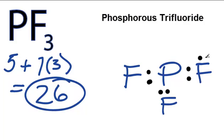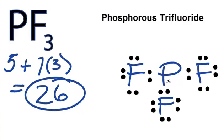So 2, 4, 6, 8, 10, 12, 24, and we have 2 left, and we'll put those on the central atom.